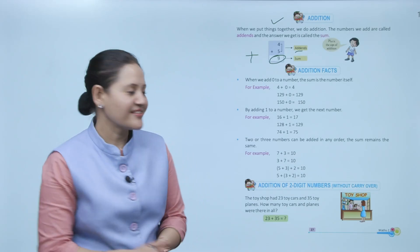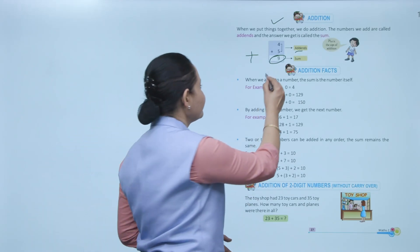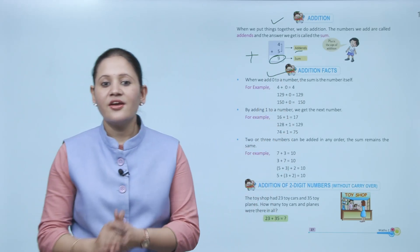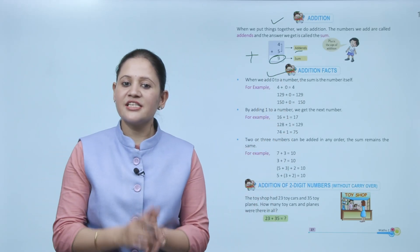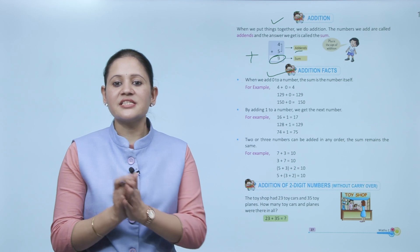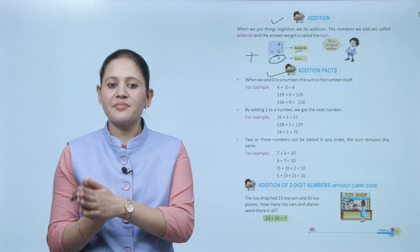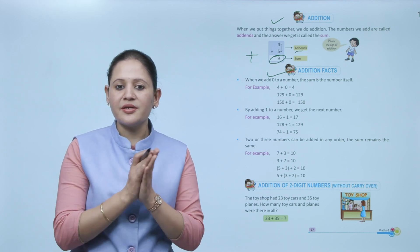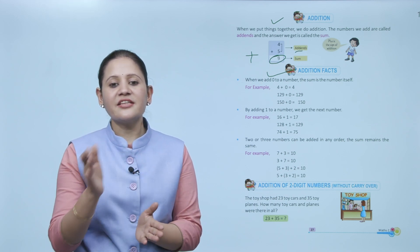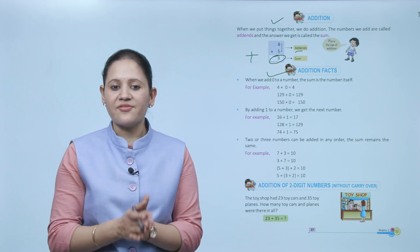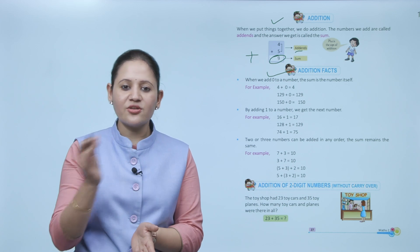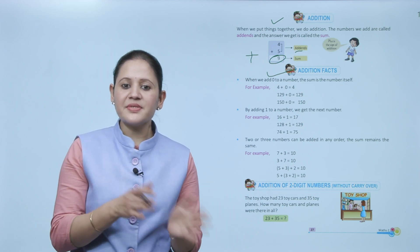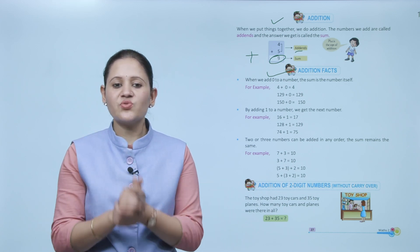Next are addition facts. When we add zero to a number, the sum is the number itself. Like 4 plus 0 is 4, and 129 plus 0 is 129.